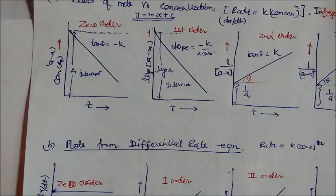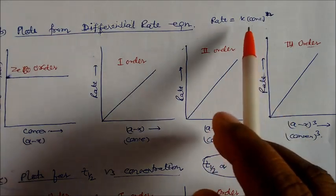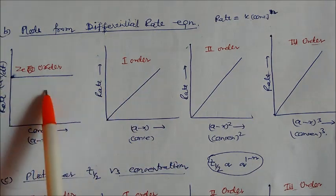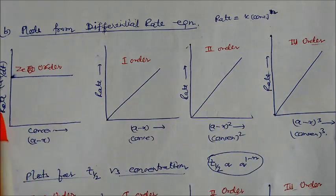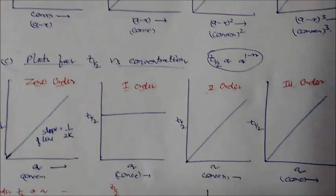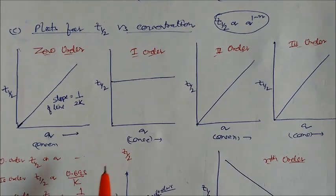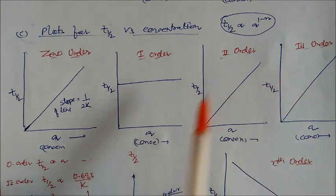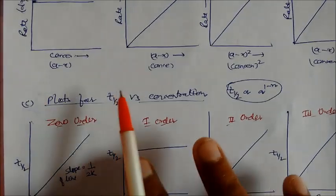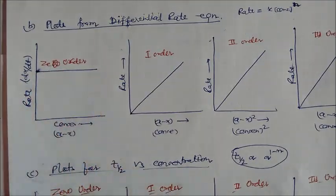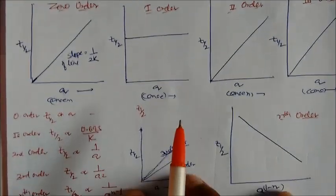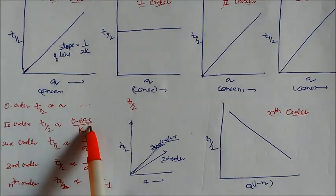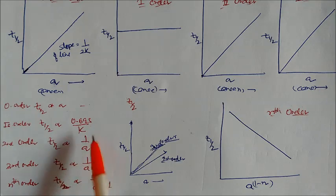For the differential rate equation, rate equals k times concentration to the power n. Plotting rate versus concentration: for zero order the rate does not depend on concentration, but for first, second, and third order they depend on concentration. We can also plot half-life versus concentration. For zero order, half-life depends on concentration; for first order it is independent and the graph is parallel to the concentration axis; for second and third order it is dependent.